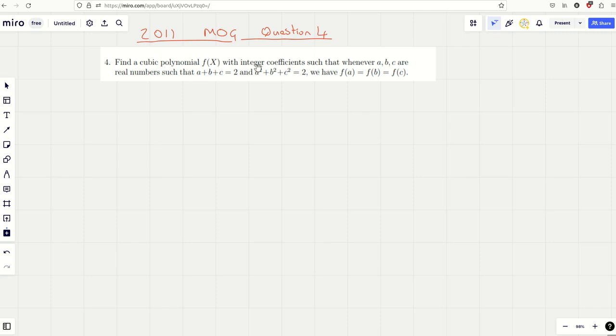Find a cubic polynomial with integer coefficients such that when A, B and C, when given A, B and C the following are real numbers, the following results hold: the sum of it is 2, the sum of the squares is also 2, and we want to make sure that for this cubic polynomial we have F(A) equals F(B) equals F(C) when those two conditions hold.